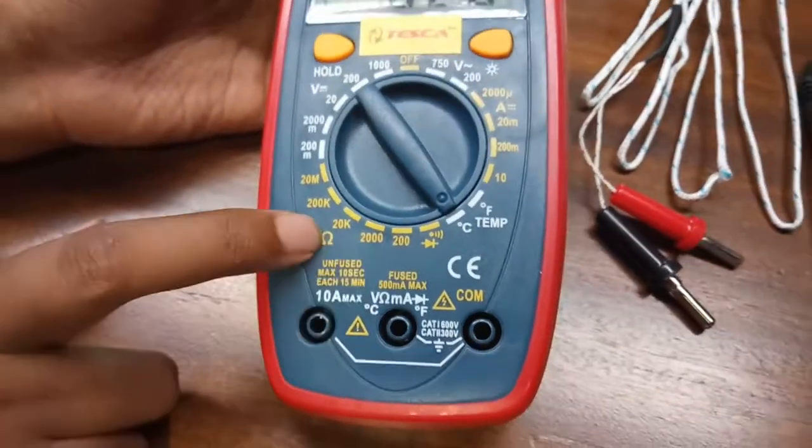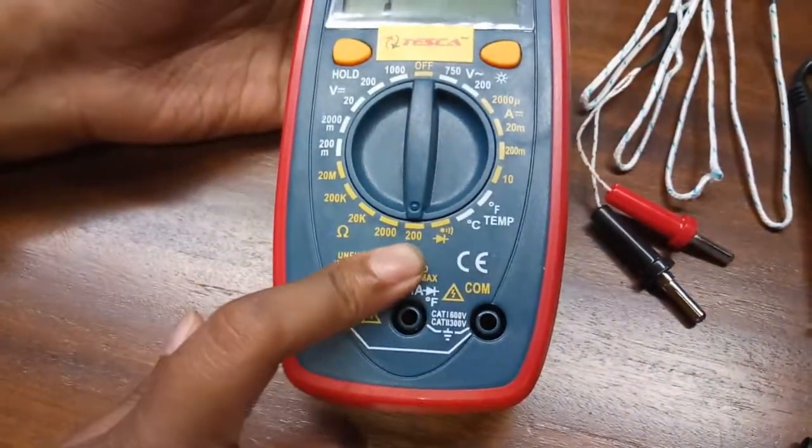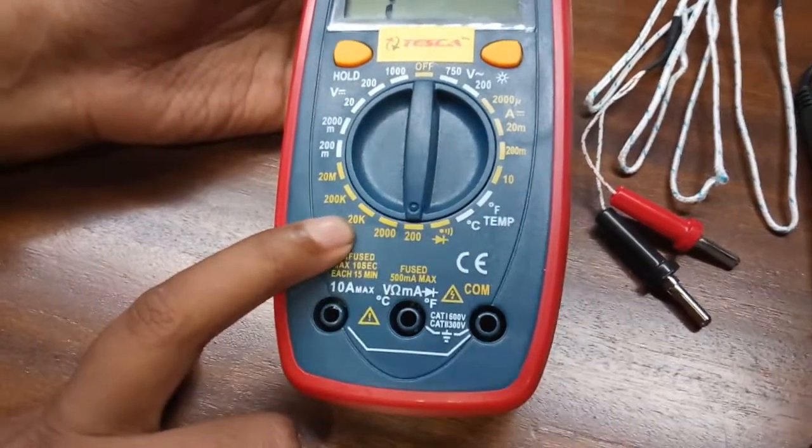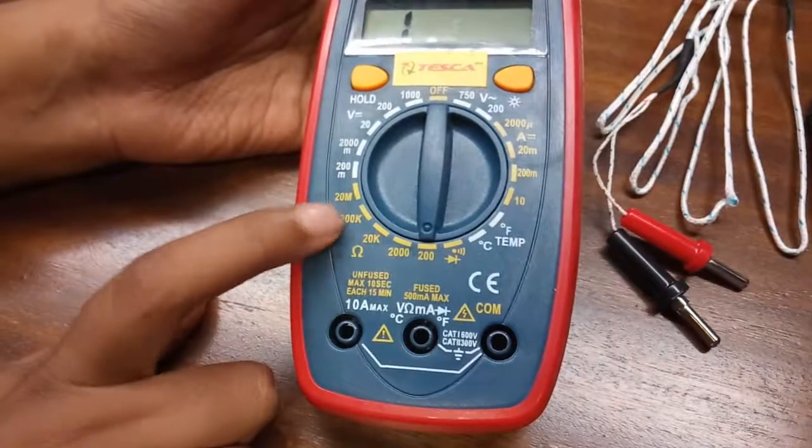Now here this is the resistor. With this, you can select resistor. This is 200 ohm, this is 2000, this is 20k, this is 200k and this is 20 mega ohm.